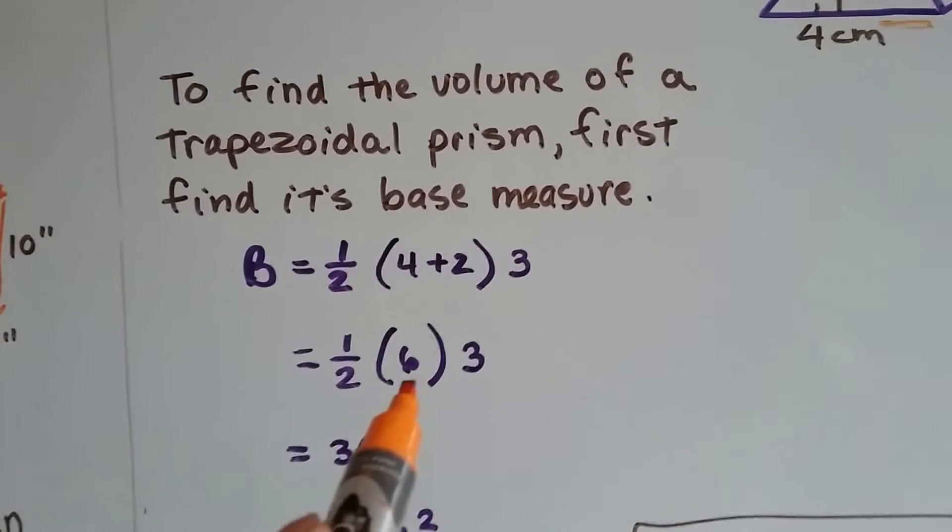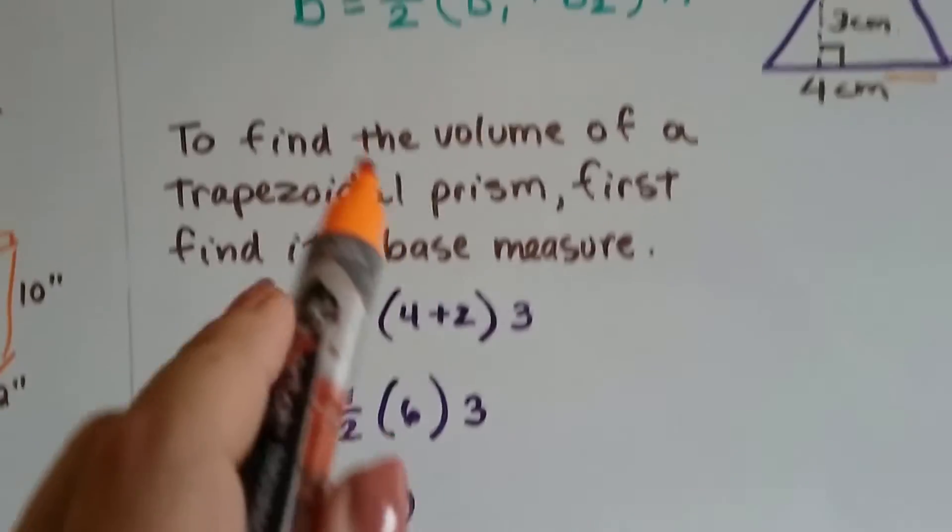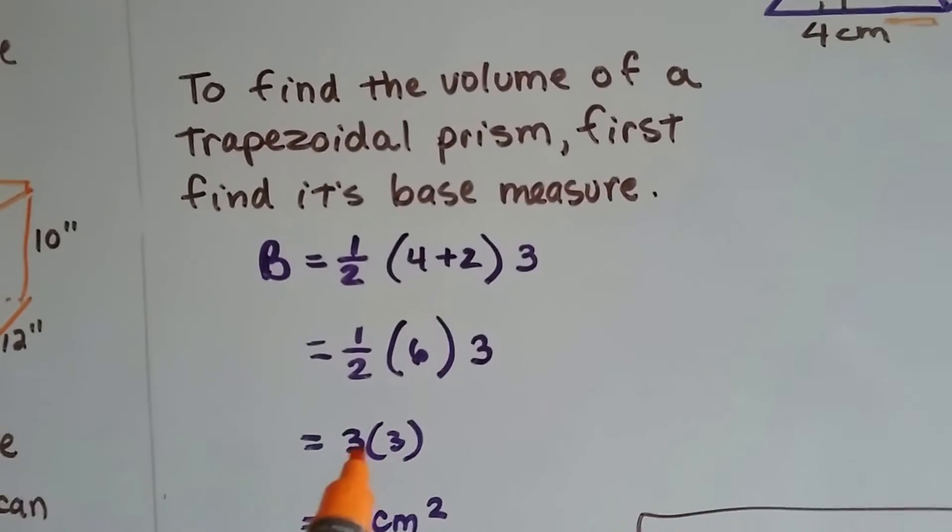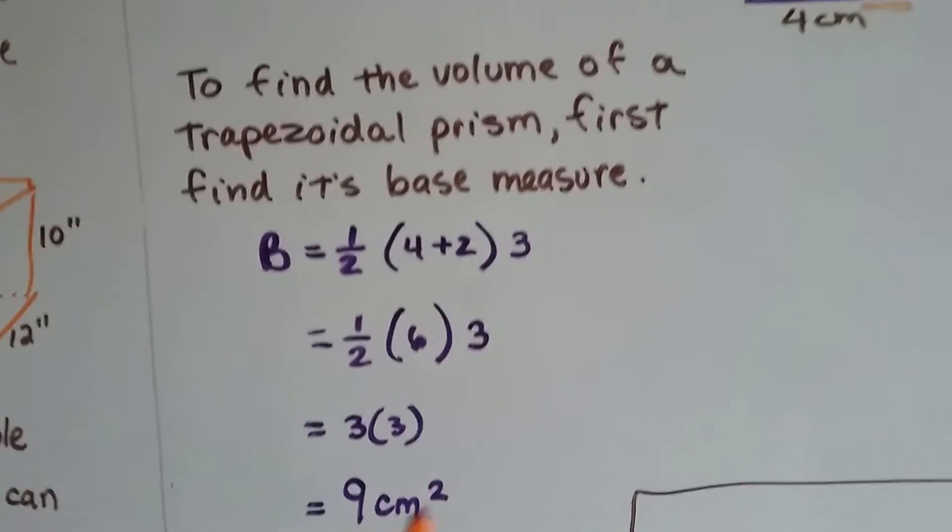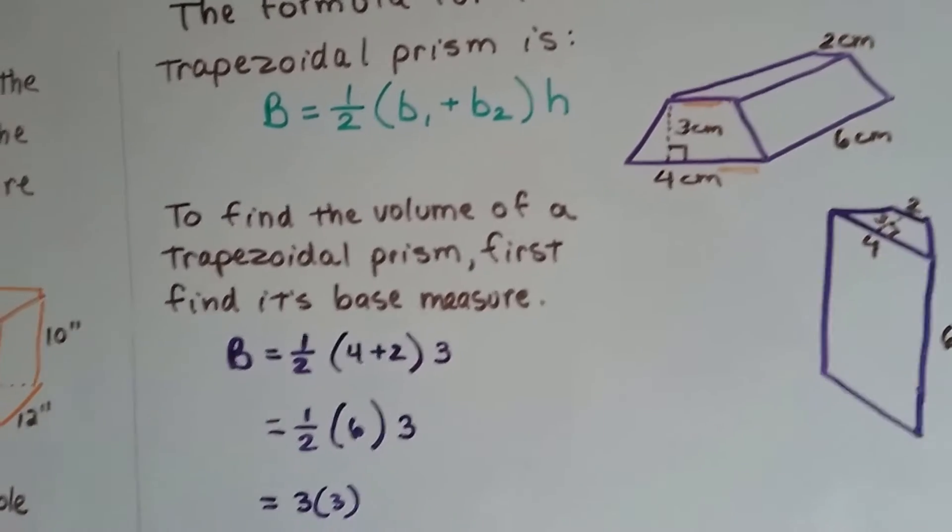4 plus 2 is 6, half of 6, because that's what the formula says, half of it, is 3, and 3 times 3 is 9. So we know the area of that trapezoid is 9.